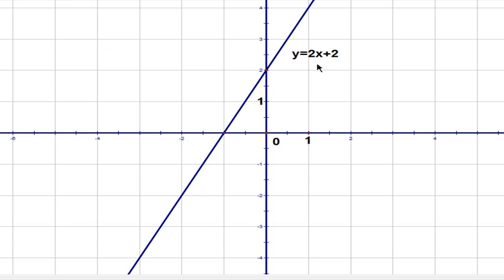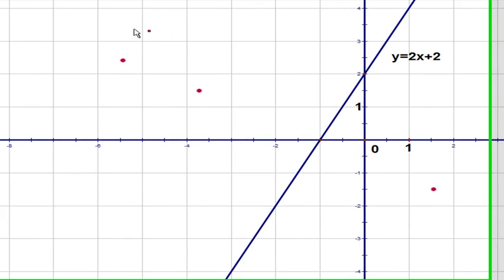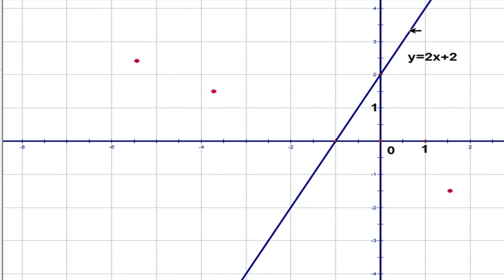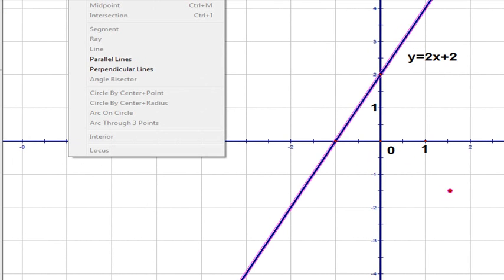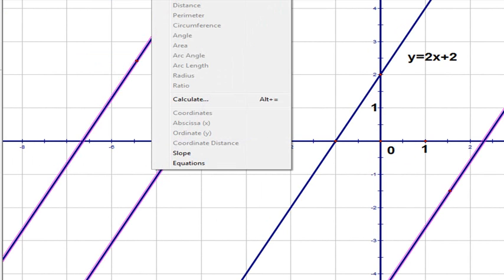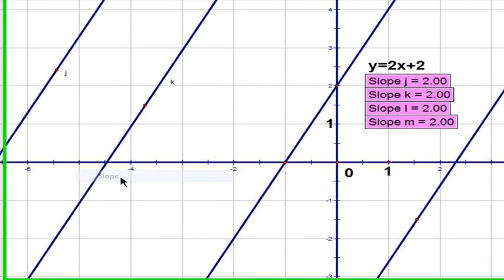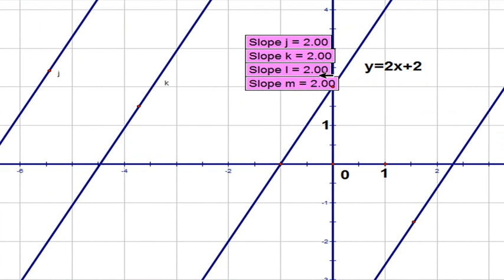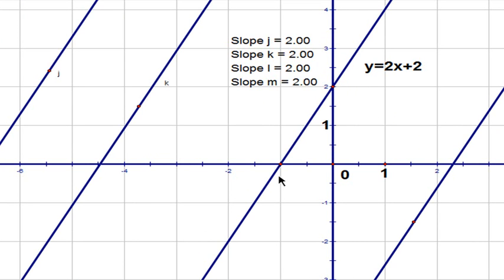Now, the slope of this line is 2 and if we just take a bunch of other lines that are parallel to this, let me construct them quickly for you. They're all right here and look at the slopes of these lines. Each one of them has slope equals how much? 2.